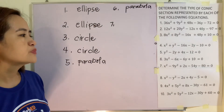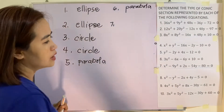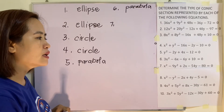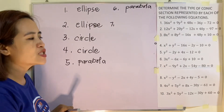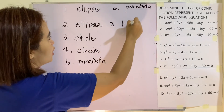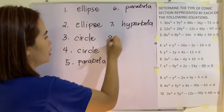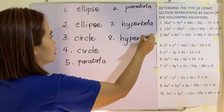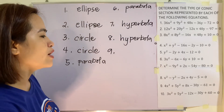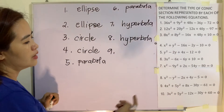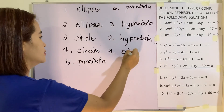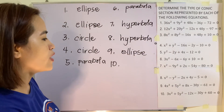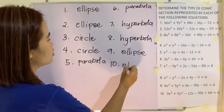Number seven: x squared minus y squared. If you notice, x and y are separated by a minus sign — meaning y squared has a negative coefficient and x squared has a positive coefficient. So this one is a hyperbola. For number eight: x squared minus y squared — again, this one is a hyperbola. Number nine: 4x squared plus 5y squared — they are both positive and have numerical coefficients, so this one is an ellipse. And for number ten: 3x squared plus 5y squared minus 12x — this one is also an ellipse.